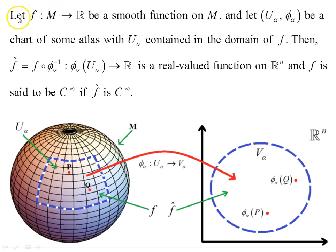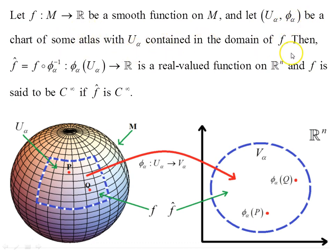We let f, some scalar function, be a smooth map from the manifold to the reals, and let (U_alpha, phi_alpha) be a chart of some atlas with U_alpha contained in the domain of f. As covered in the original tangent space video, f-hat is related to f in the form of f composed with phi_alpha inverse, and that maps phi_alpha of U_alpha to the real numbers.